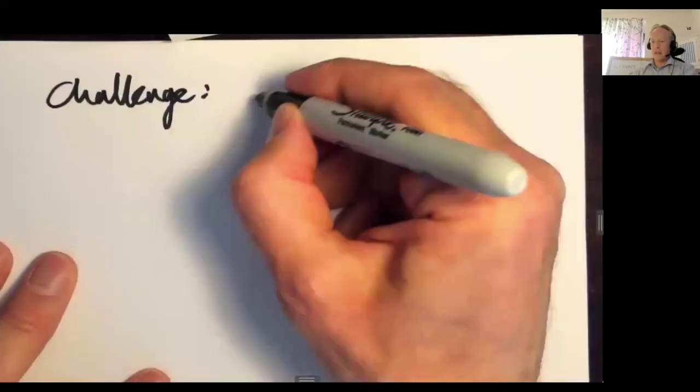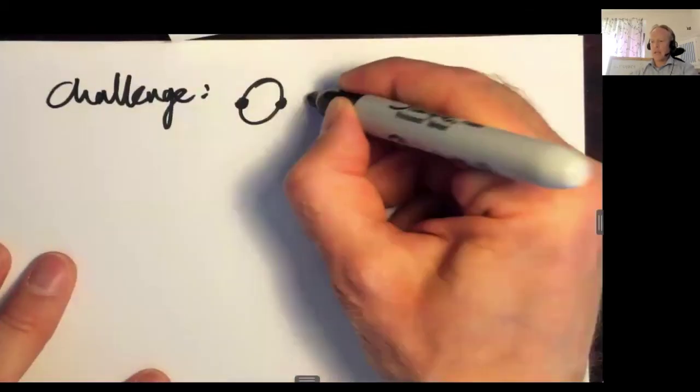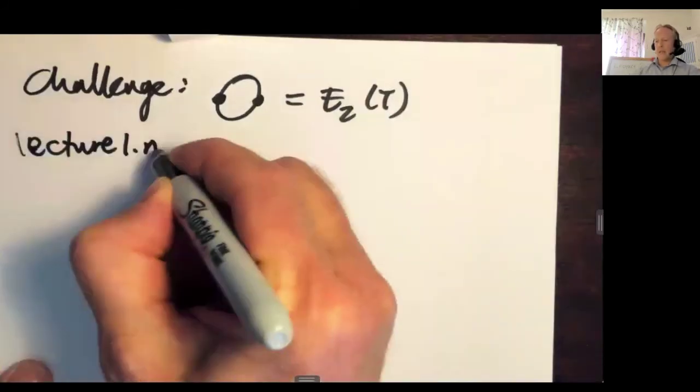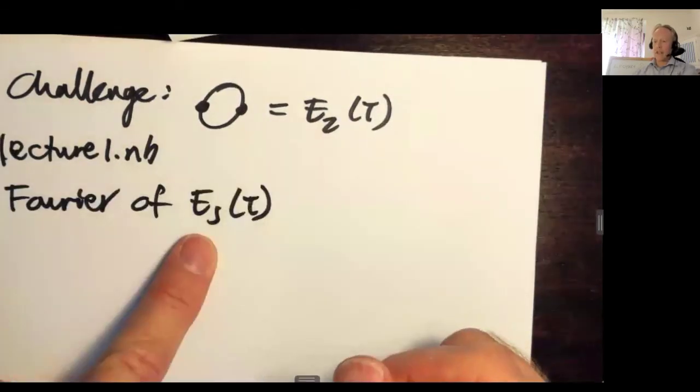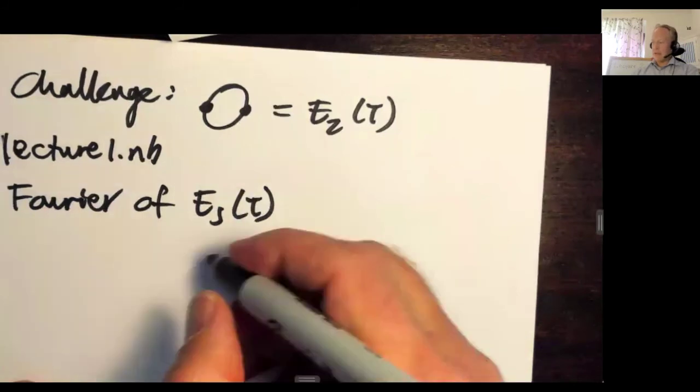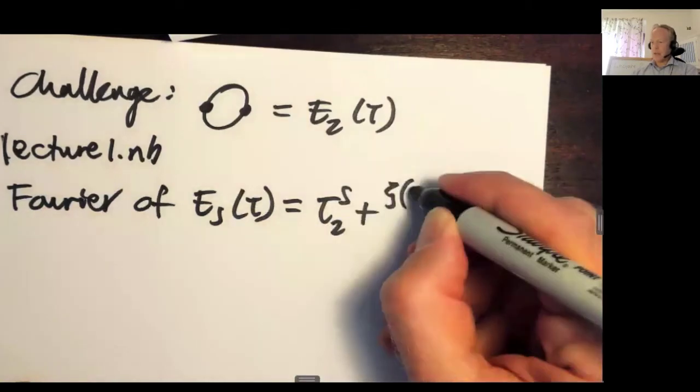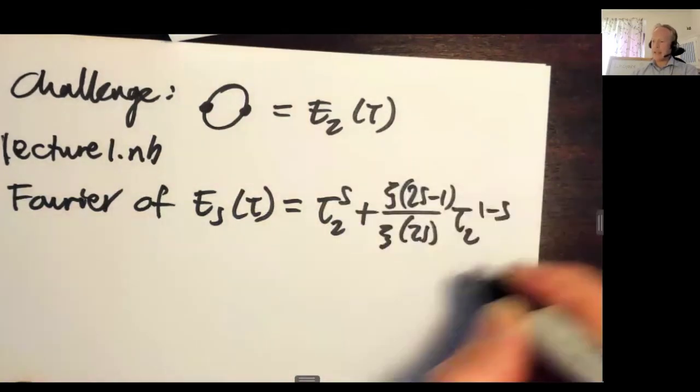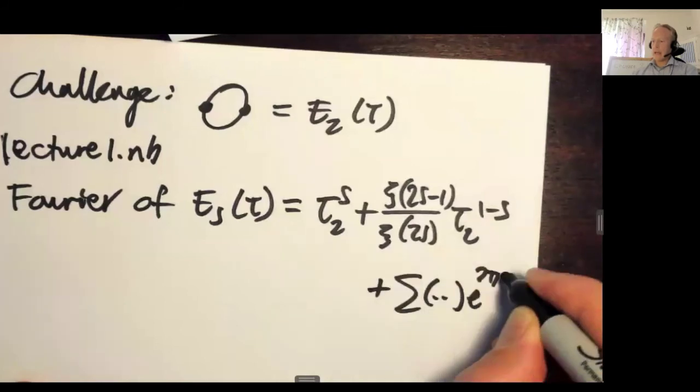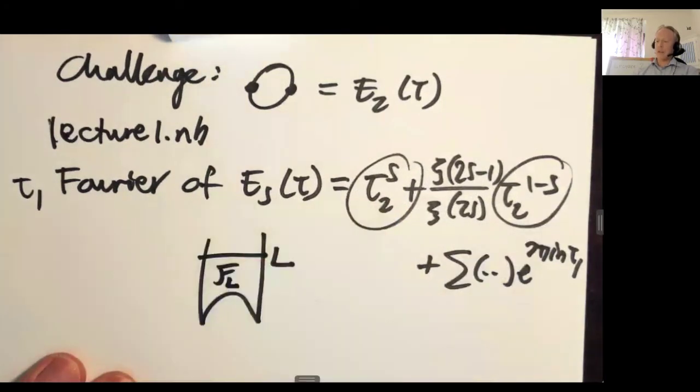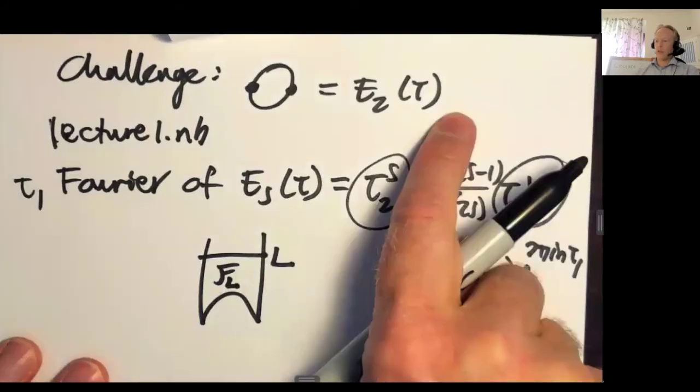The challenge, we said that this modular graph function was E2 tau. Now, if you looked at my file lecture 1.nb, the Fourier expansion of the non-holomorphic Eisenstein series in tau 1 shows you that, in fact, it does not behave nicely as tau 2 goes to infinity. So it has some factor here and has some factor here. And then it has this nice e to the 2 pi i n tau 1. For example, for S equals 1, it grows linearly. So you work on a cutoff fundamental region. You subtract these divergences. And then the thing that's left is your Rankin-Selberg-Zagier transform.